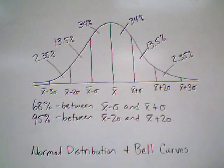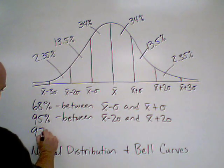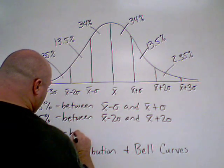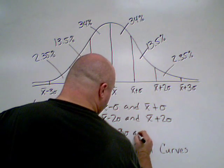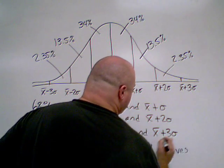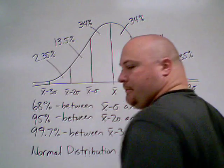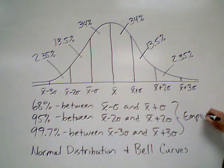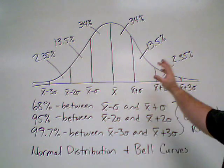We're constructing our bell curve completely here. It tells us that 99.7% of all of our data lies between our mean minus three standard deviations and our mean plus three standard deviations — so it's almost all of our data. What this is called is the empirical rule, and this is not going to change as long as we have a normal distribution.